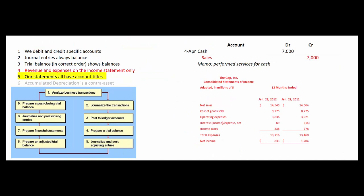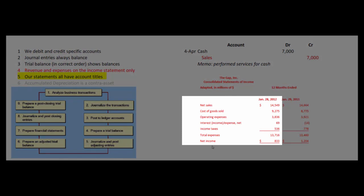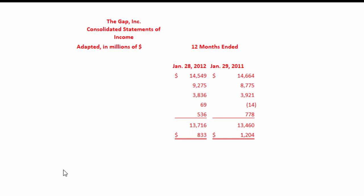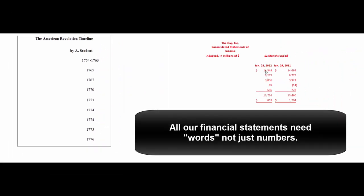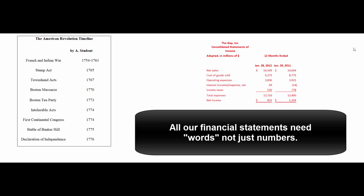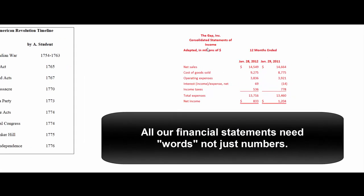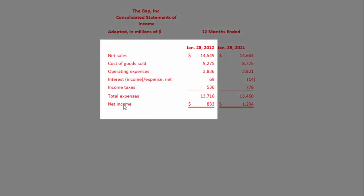All financial statements, including the trial balance and adjusted trial balance, need account titles. Not only do we have a title for what the statement is at the top, but we also need account titles within the statement. For example, preparing an income statement without account titles would be like preparing a report on the American Revolution timeline with just the dates — we need to know what the numbers correspond to. We usually list the most recent fiscal year closest to the account titles.